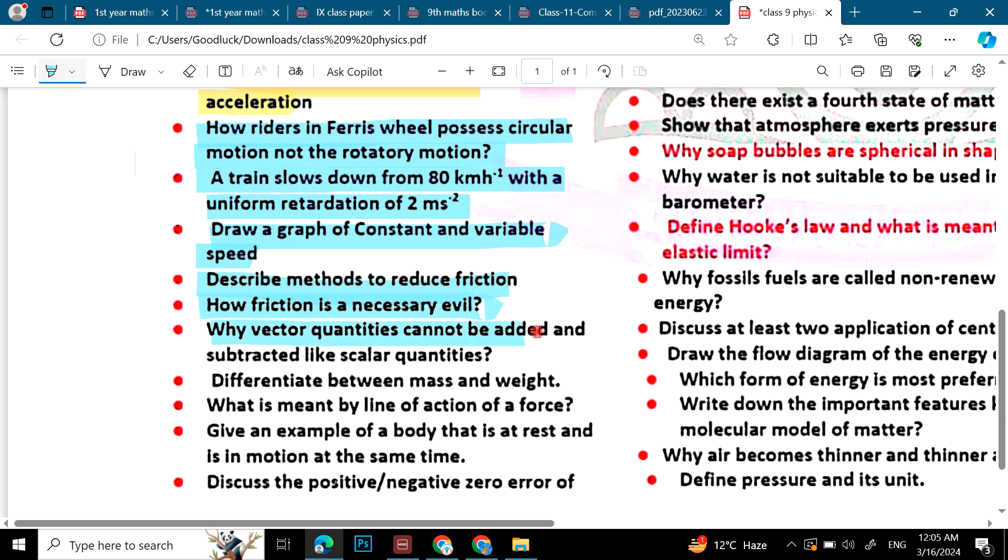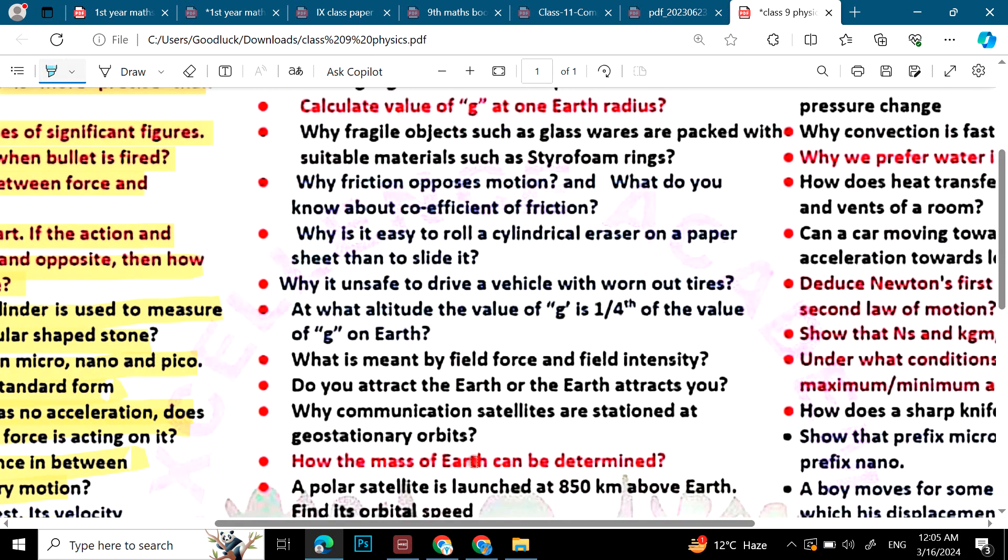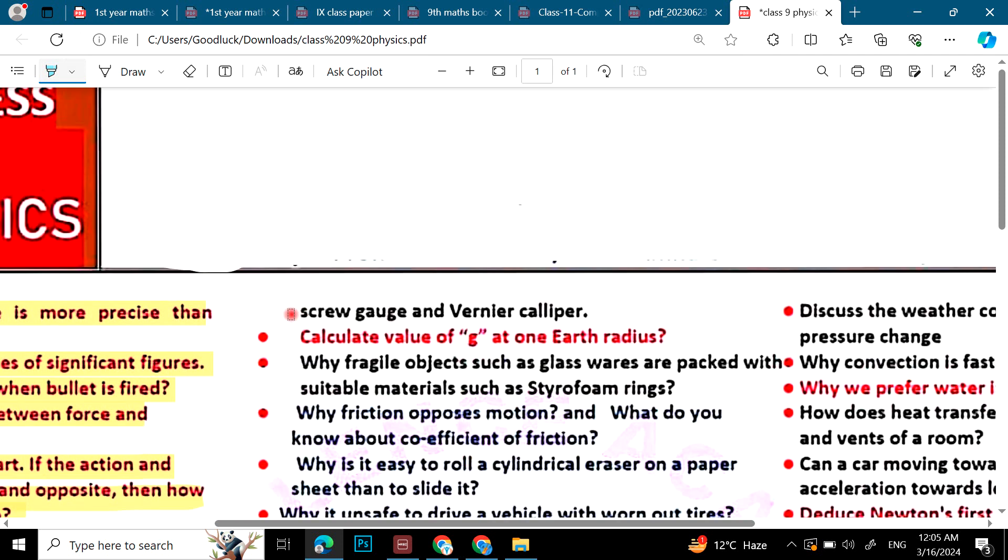Why vector quantities cannot be added and subtracted like scalar quantities. Differentiate between mass and weight. What is meant by a line of action of force? Give an example of a body that is at rest and is in motion at the same time. Discuss the positive/negative zero error of screw gauge and vernier caliper.